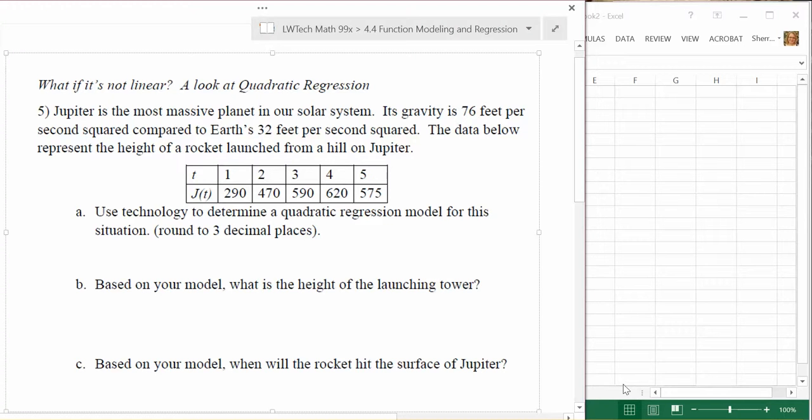Consider the following situation. Jupiter is the most massive planet in our solar system. Its gravity is 76 feet per second squared compared to Earth's 32 feet per second squared. The data below represent the height of a rocket launched from a hill on Jupiter.